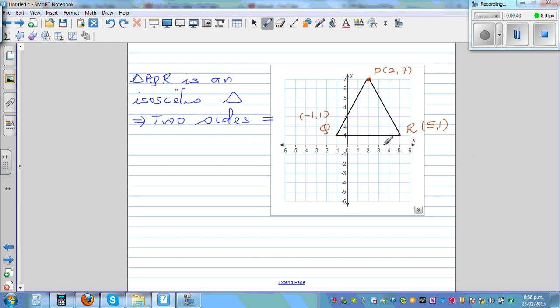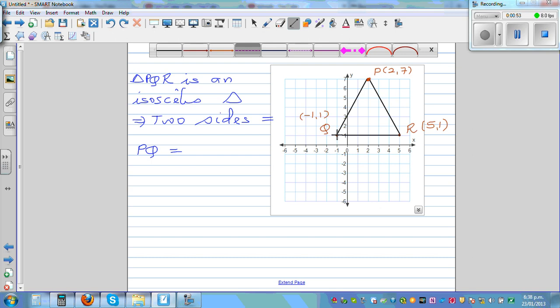So let's find side PQ. What's the length of PQ? To find the length of PQ, let's draw a right angle triangle. So let's join P and Q by a right angle triangle like this. So this is a right angle.